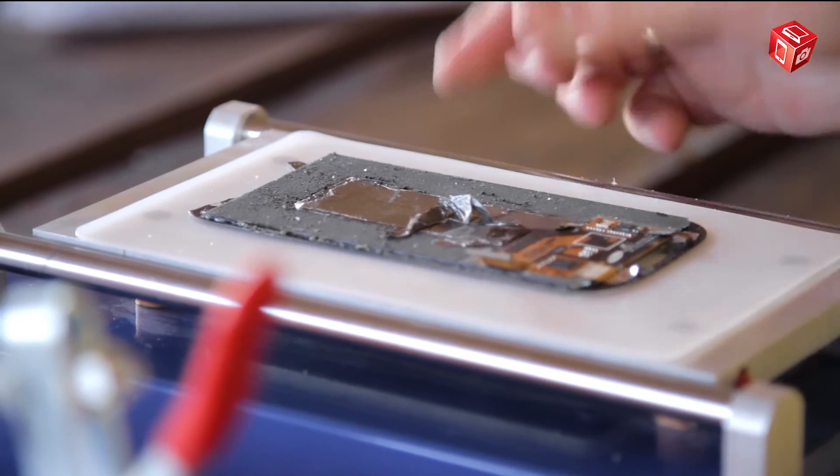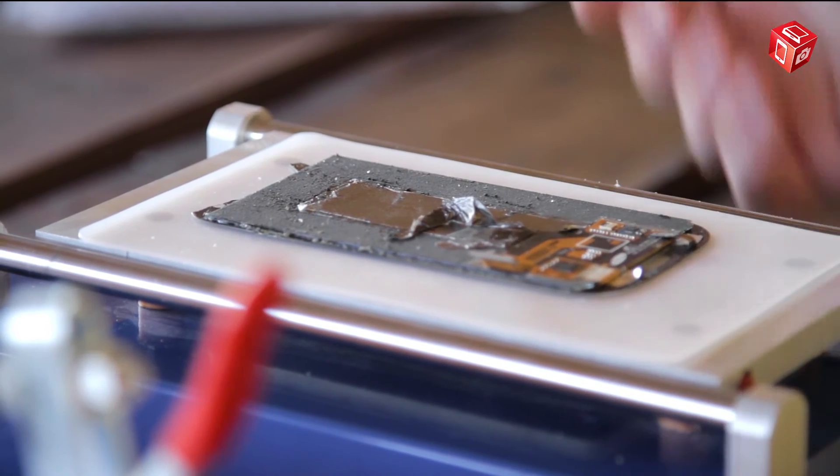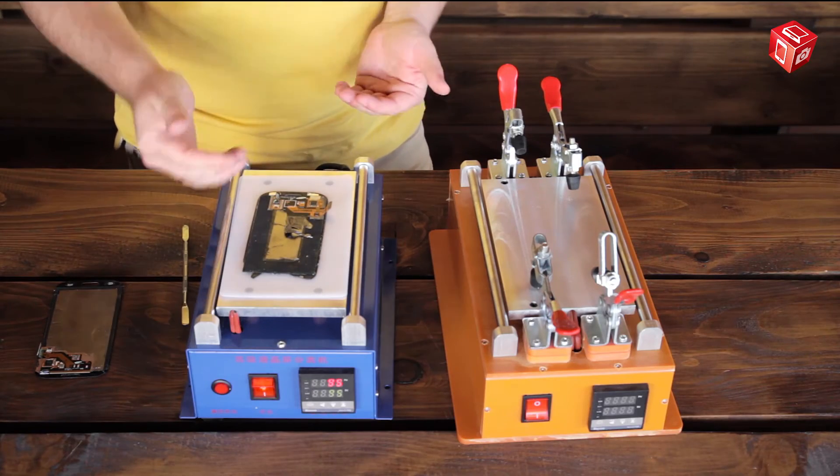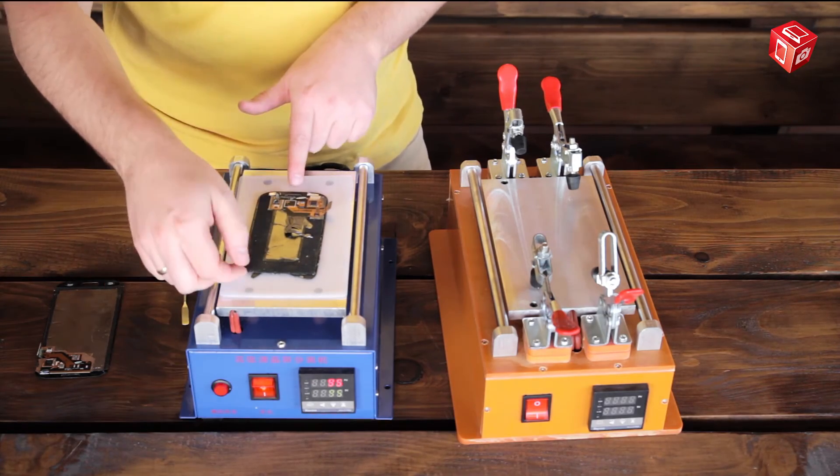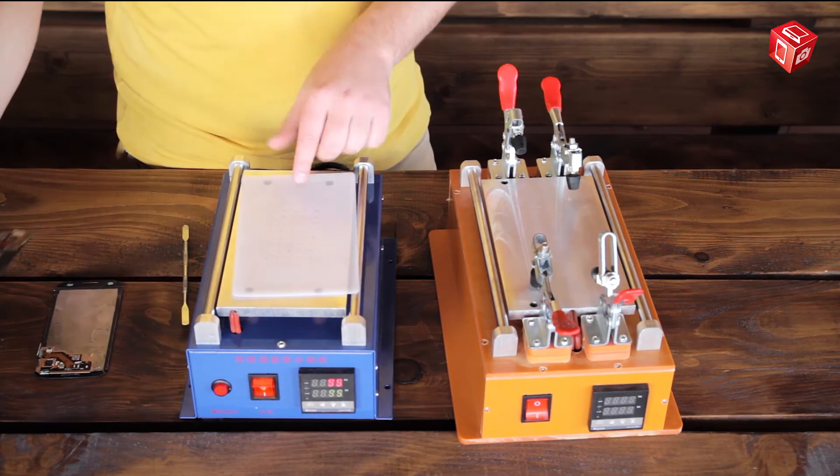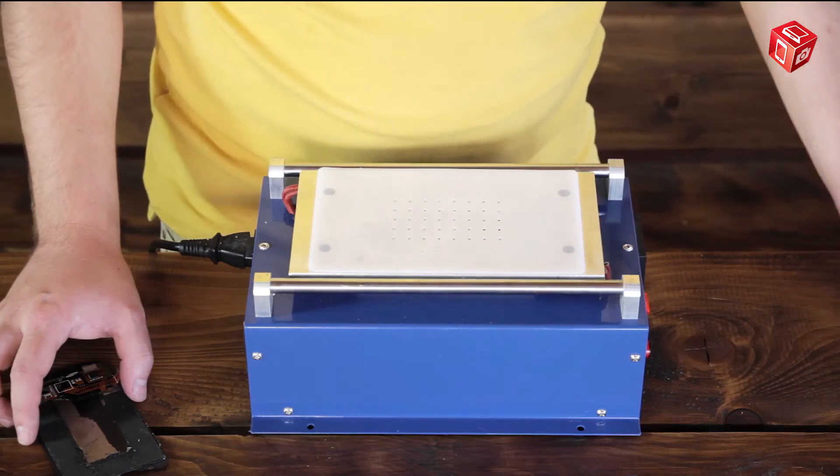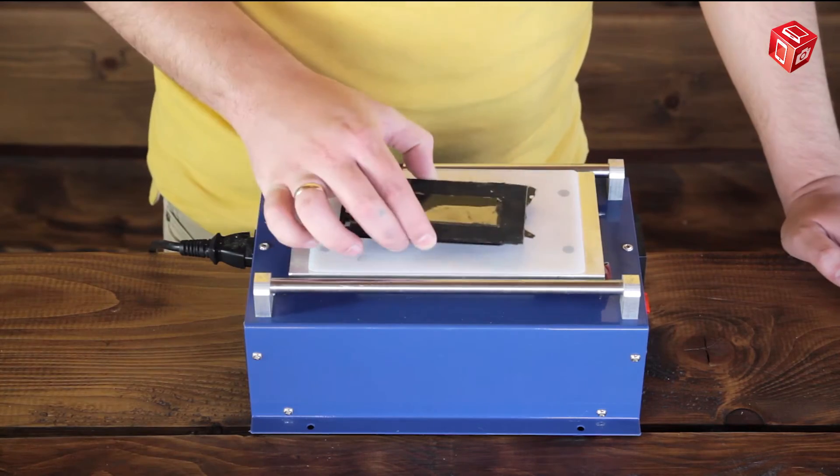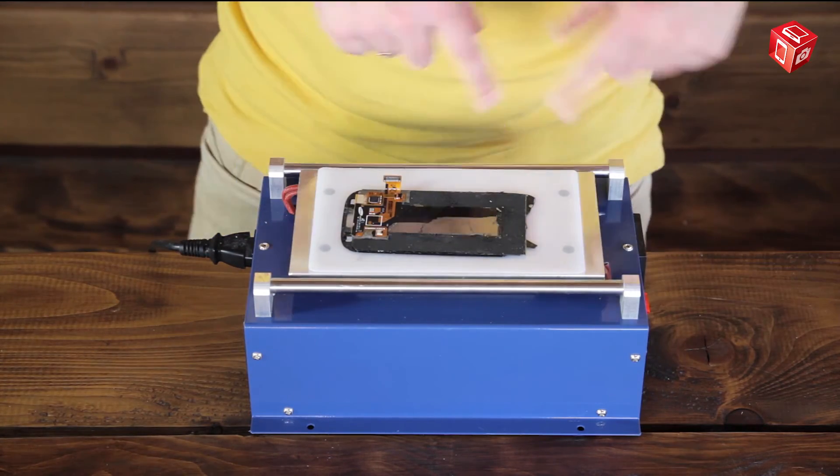Now we will see what the main advantage of a separator with built-in vacuum pump is. Display module with damaged glass is safely and easily fixed by air. When using this separator, it does not matter which glass needs to be fixed, undamaged or with damaged edges.